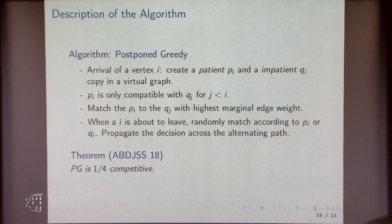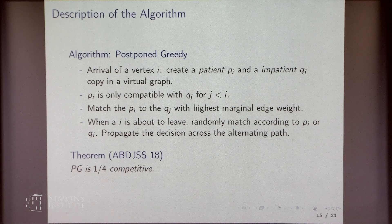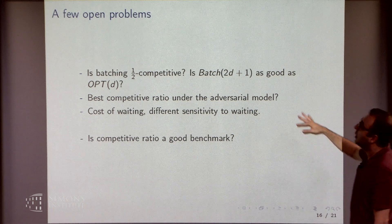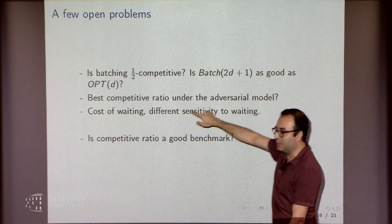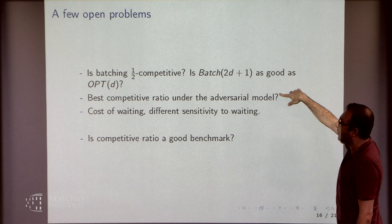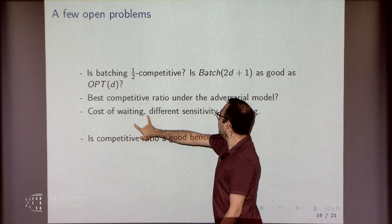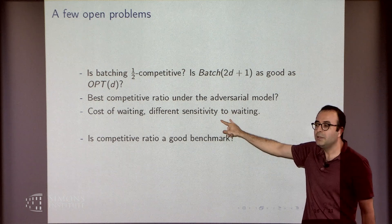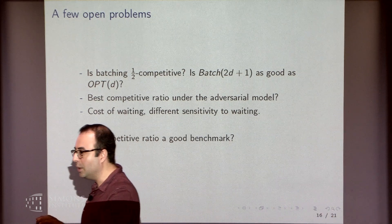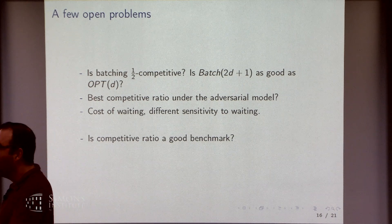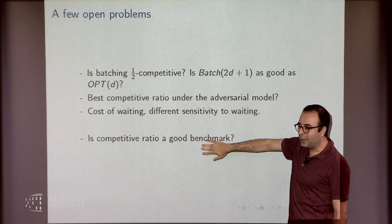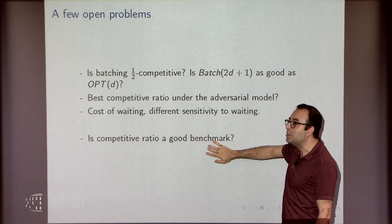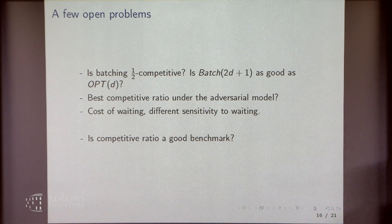We can show this algorithm is one-fourth competitive. The lower bound is half, so the right number is somewhere between one-fourth and half — we don't know what it is. The open problems are: is batching half-competitive? Is batch 2d plus 1 as good as optimal for d? What is the best competitive ratio under the adversarial model? And there's the question of cost of waiting when vertices have different sensitivity, like someone needing a ride or kidney immediately versus having time to wait.